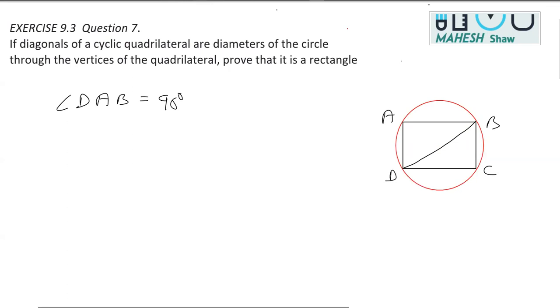Likewise, we can see there is a semicircle on the other side. This is also a semicircle considering BD as the diameter. So from the same reasoning, we can say angle DCB is equal to 90 degrees, and the reason for this is angle in a semicircle is a right angle.